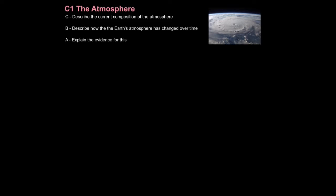In this tutorial we're going to look at the atmosphere. The first aim being describe the current composition of the atmosphere, that means the balance of gases that make up the atmosphere, then describe how the Earth's atmosphere has changed over time, and then look at the evidence that supports our atmospheric composition.